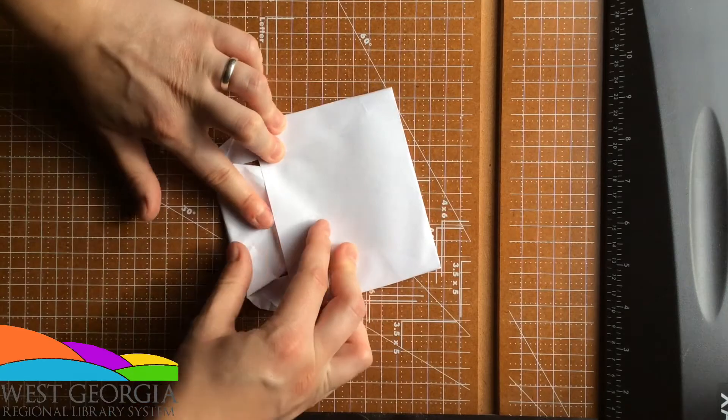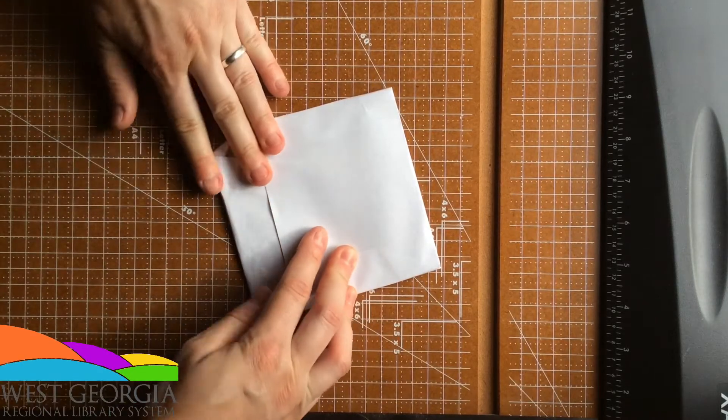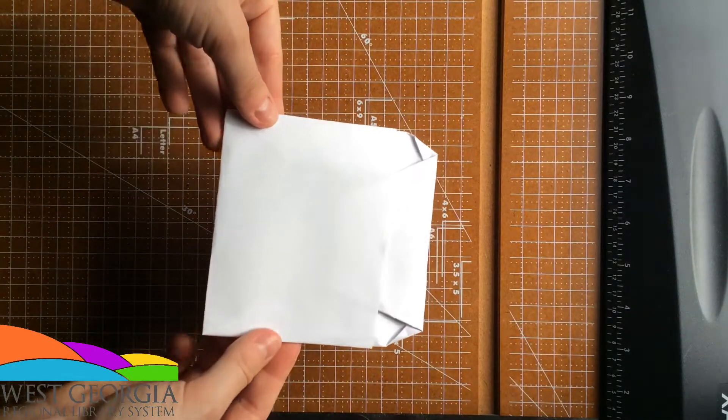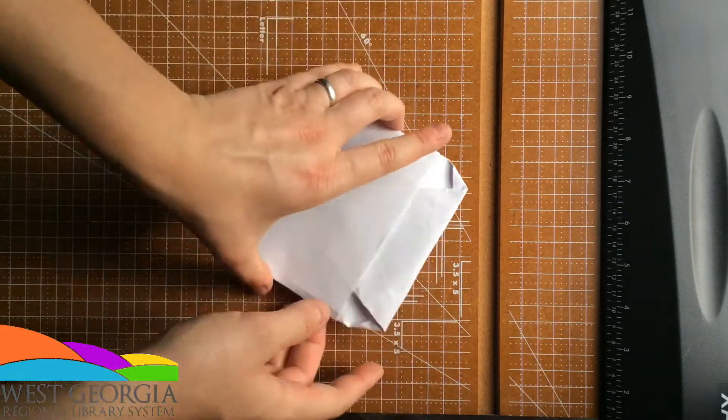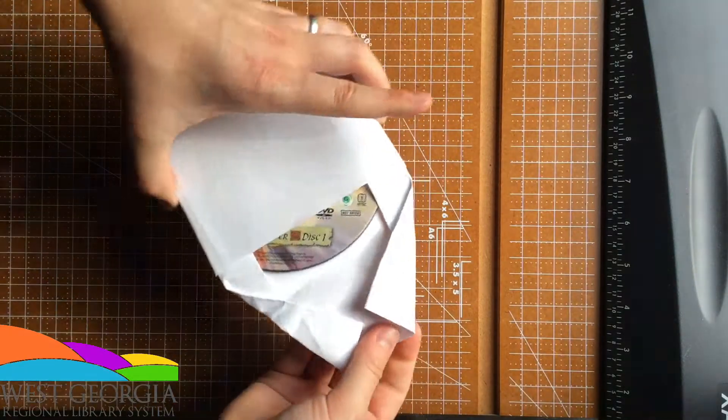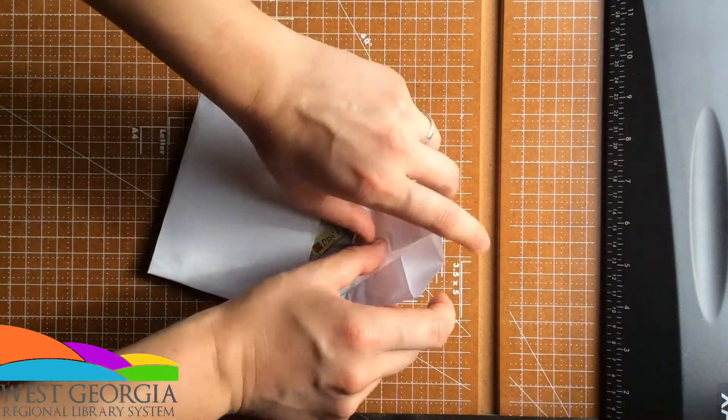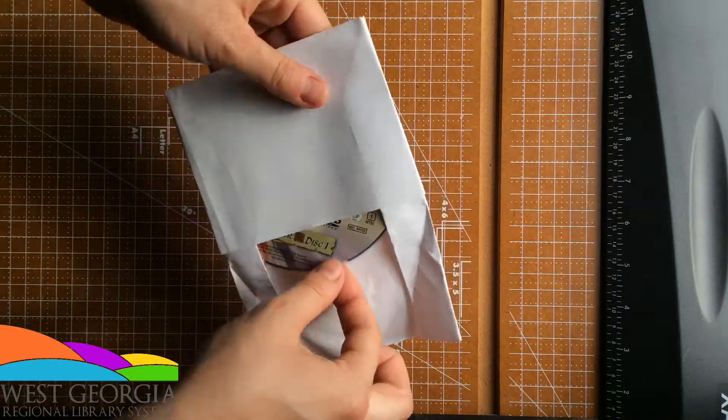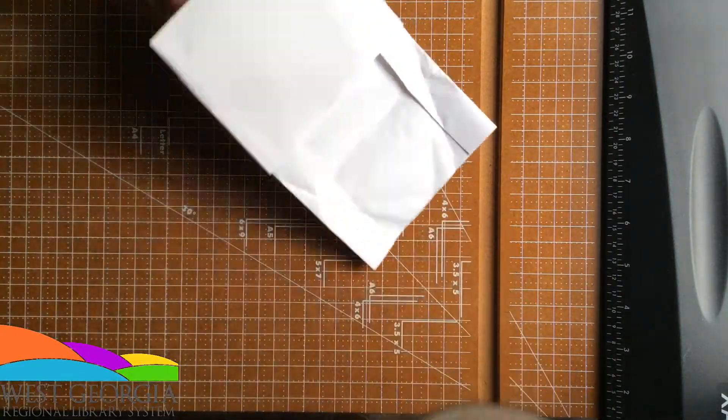Slip it under, as far as it'll go. You have your very own CD case. Then to get it out, you just unfold that. Take it out.